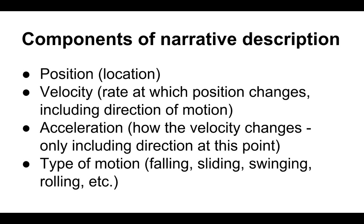So if our velocity is, say, to the right, and our object is getting faster, we know that acceleration must also be to the right — our velocity is becoming even more to the right, so that's the direction for acceleration. If our object is moving to the right and it's slowing down, then that velocity is becoming less to the right, and if that motion continues it'll actually start moving to the left, so acceleration must be to the left as well. In general, if an object is speeding up, the velocity and acceleration are in the same direction; if the object is slowing down, they're in opposite directions.